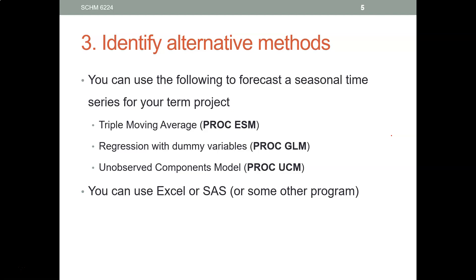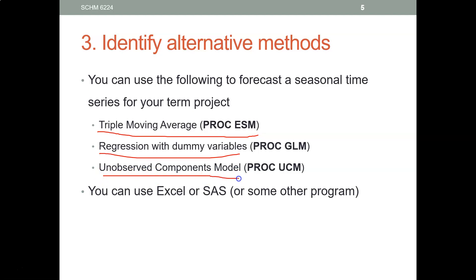In assignment four, I'm going to ask you to use triple exponential smoothing. Why triple exponential smoothing? Because your data will be seasonal, and there could be a trend in your data as well. Then you're going to use regression with dummy variables, and I'm going to ask you to use the unobserved components model.